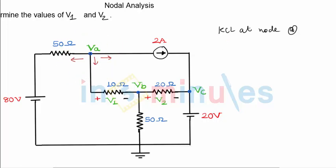So the first current through this 50 ohm resistance will be VA minus 80 divided by 50, plus the vertical current in this branch will be VA minus VB divided by 10. Because current is flowing away from VA and towards VB, its expression will be VA minus VB divided by 10, plus the third outgoing current is 2 amperes. So 2 is equal to zero. This is what we get.